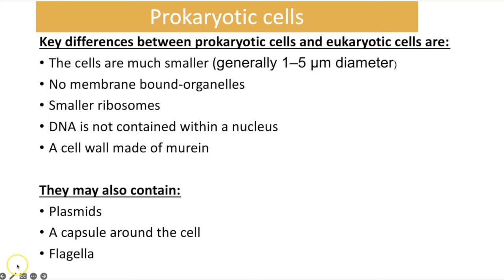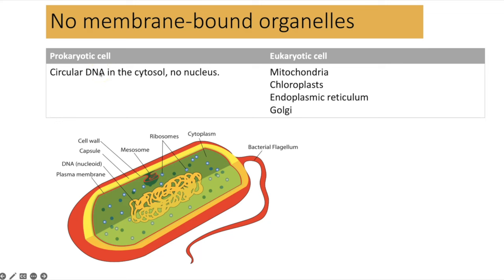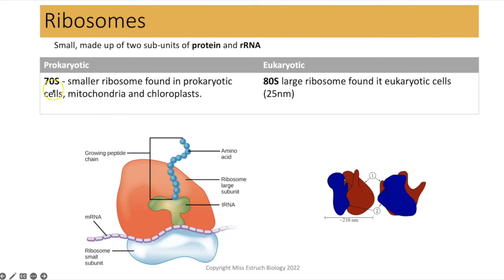Prokaryotes have no membrane-bound organelles — so no mitochondria, chloroplasts, endoplasmic reticulum, Golgi apparatus or lysosomes — but they do have circular DNA loose within the cytosol. They have the smaller 70S ribosomes.